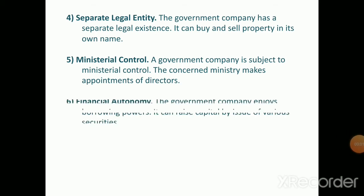The sixth feature is financial autonomy. A government company enjoys borrowing powers — it can raise capital by issuing various securities. It is also free to use its revenue for the growth and expansion of the company. Government companies raise funds by issuing securities and use their profits for company growth and expansion.